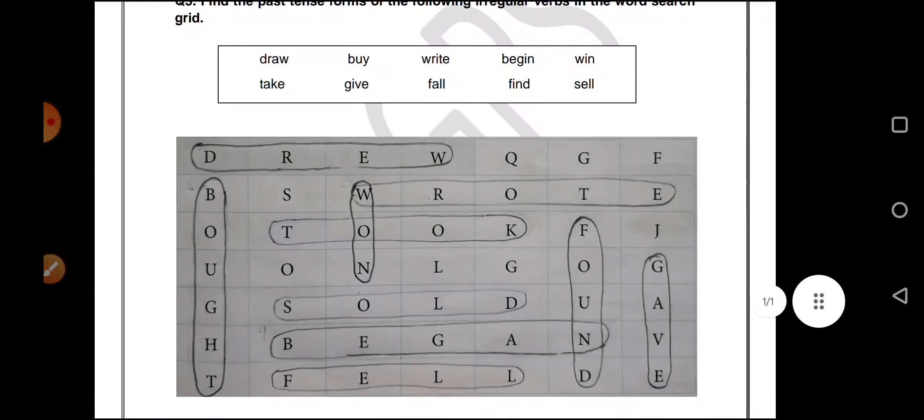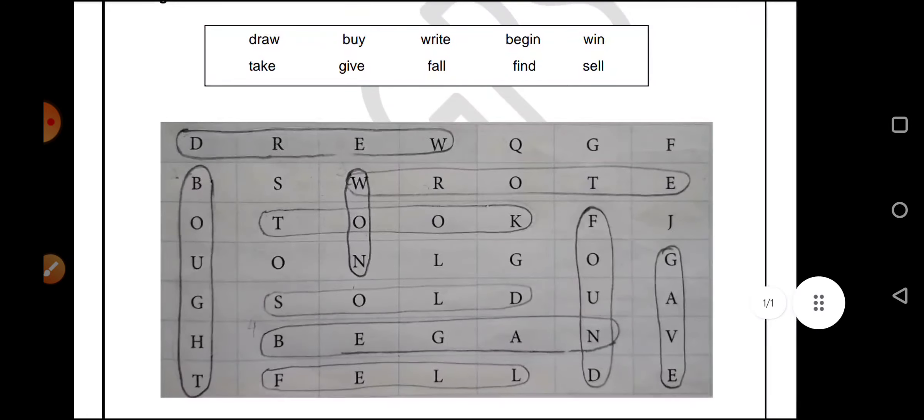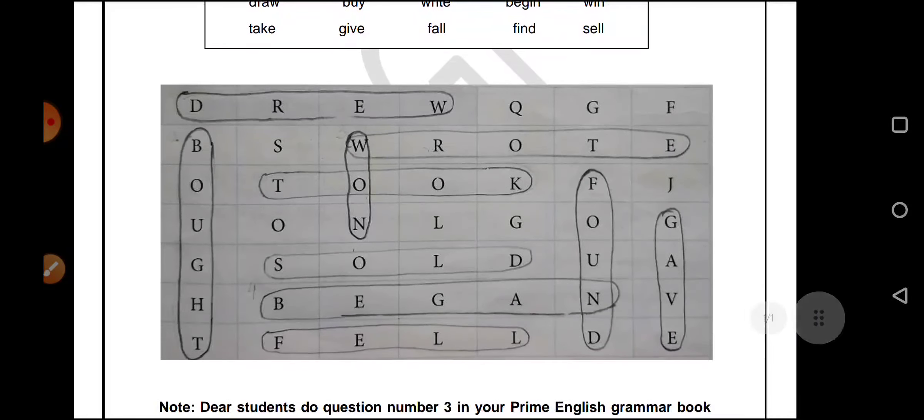We have words like draw, buy, write, begin, win, take, give, fall, find, sell. What you have to do? You will have to find the irregular verb of it in the puzzle.